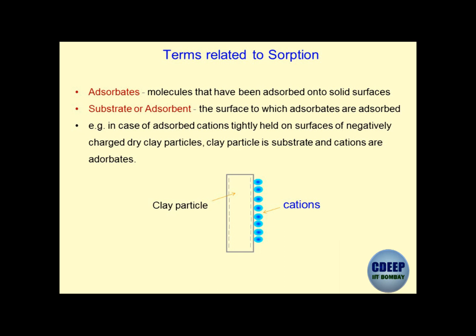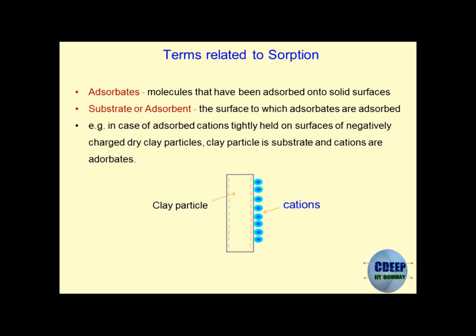In the case of adsorbed cations tightly held on surfaces of negatively charged clay particles — bentonite is used for cleansing skin: the moment you apply it on the skin, on the surface of bentonite particles, most contaminants, sweat, bacteria, and different types of salts get sorbed, and hence the skin becomes rejuvenated.